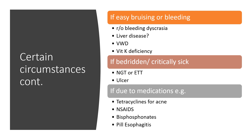If we could note easy bruising or bleeding in other parts of the body, then we should rule out bleeding dyscrasia, liver disease, von Willebrand disease, and vitamin K deficiency. If this is a child that is being resuscitated or critically ill, then we should be thinking: could this be as a result of our intervention — using a nasogastric tube or endotracheal intubation — or are we dealing with an ulcer already?